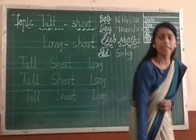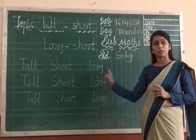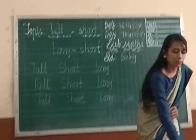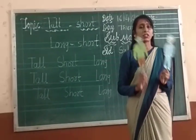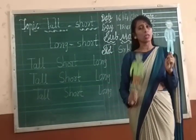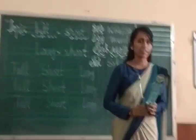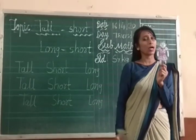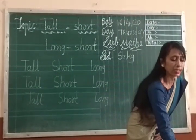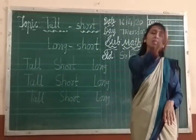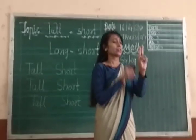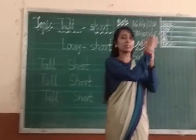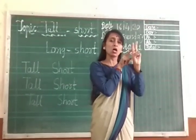Now, can you read the spellings of tall, short, and long? Understand? Okay. Now, what is tall? Stand with your papa — your papa is tall and you are short. Stand with your mommy — your mommy is tall and you are short. Madam is tall and you are short. Understand? Look at these two fingers: the pointer finger is short and the middle finger is tall. Tall, short. Understand?